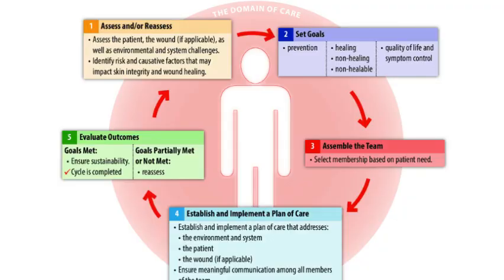Prevention and management of a skin tear, or any wound for that matter, can be broken into a simple plan of care. As you can see here, we have five different steps: number one is assess and/or reassess, number two is set goals, number three is assemble a team, number four is establish and implement a plan of care, and number five is evaluate outcomes — whether the goals have been met or not.